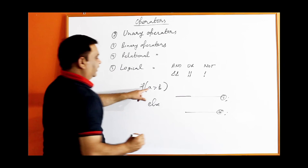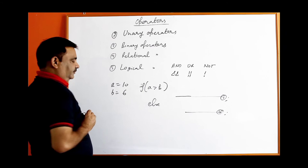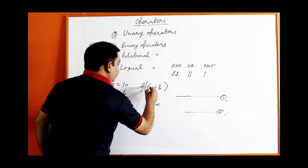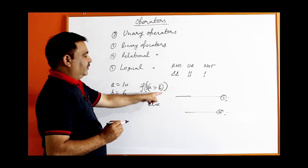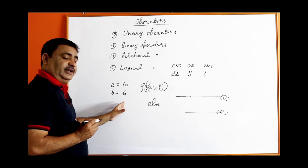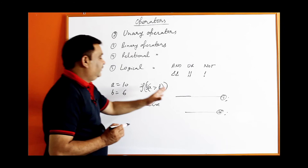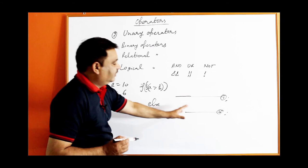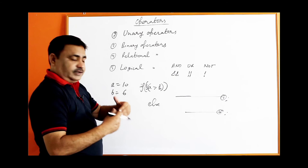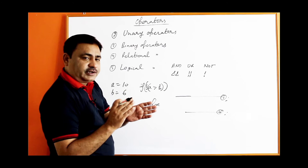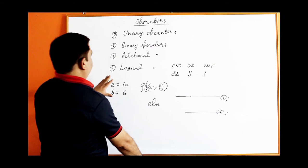The NOT operator reverses a condition. If a is 10 and b is 6, then a is greater than b is true and the first statement executes. But if you write NOT (a greater than b), it means 'if a is NOT greater than b' — since a is actually greater than b the NOT makes it false, so the second statement executes. NOT changes true to false and false to true.